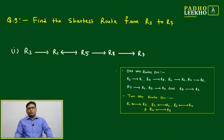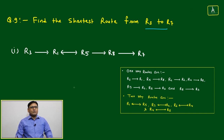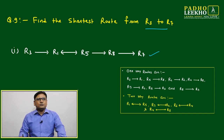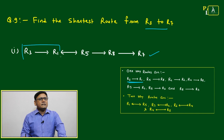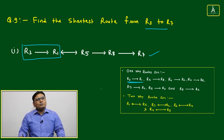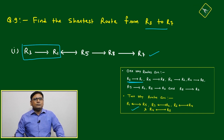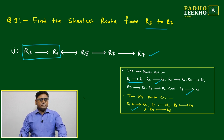Question number nine: find the shortest route from R3 to R7. From R3, there is only one originating option — go to R1, which is compulsory. Then we find the shortest way from R1 to R7: R1 → R5 → R8 → R7. So the full shortest route is R3 → R1 → R5 → R8 → R7, crossing three intermediate cities.